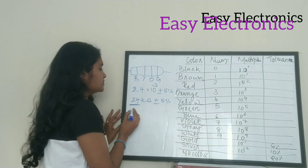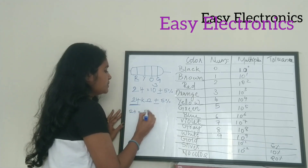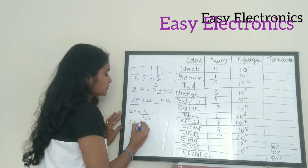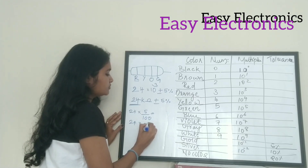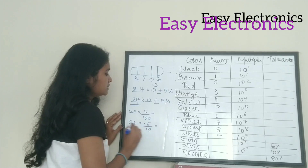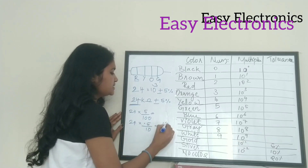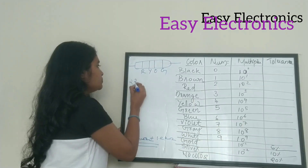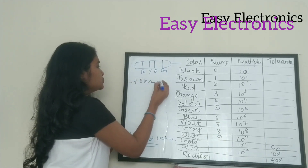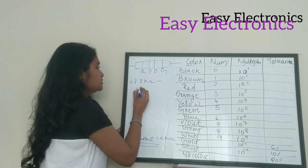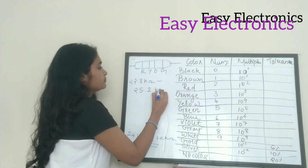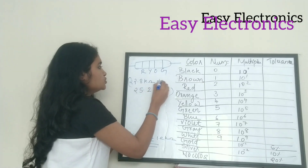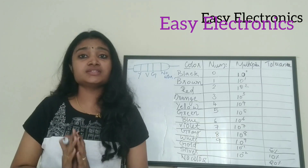24 × 5% = 24 × 5/100 = 1.2 kΩ. So the range is 24 − 1.2 = 22.8 kΩ to 24 + 1.2 = 25.2 kΩ. This is the resistance value range.